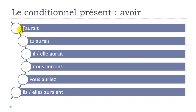Let's see that one more time: j'aurais, tu aurais, il aurait, elle aurait, nous aurions, vous auriez, ils auraient, elles auraient.